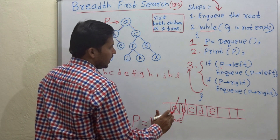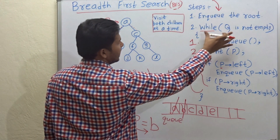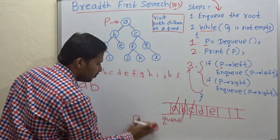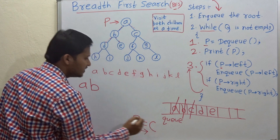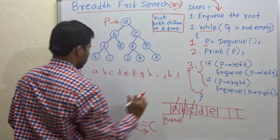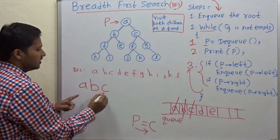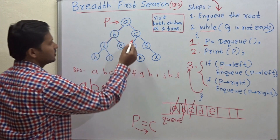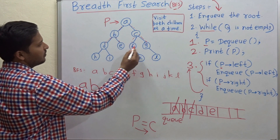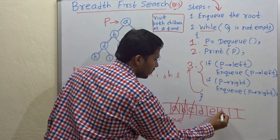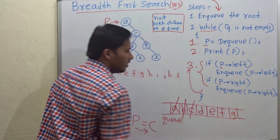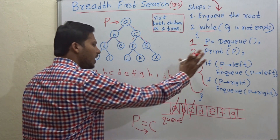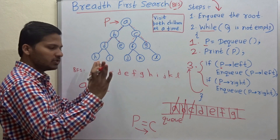Next iteration: Q is not empty. Dequeue — P is now pointing to C. Print C. Enqueue both children of C: the left child is F and the right child is G, so enqueue them. Just remember those three steps — dequeue, print, enqueue children.